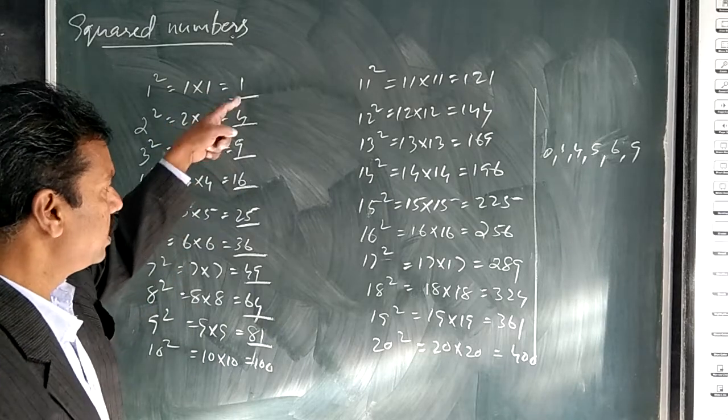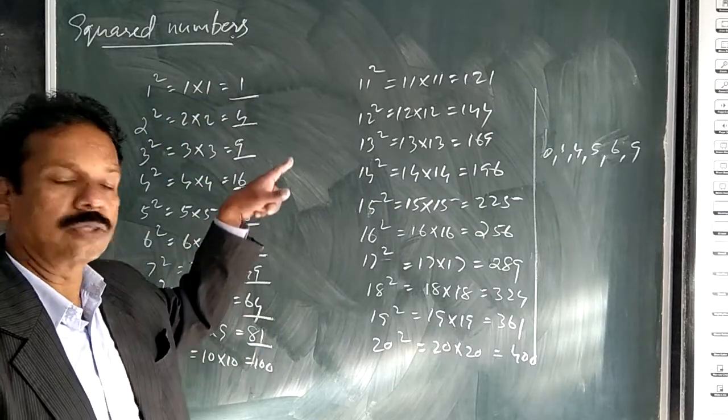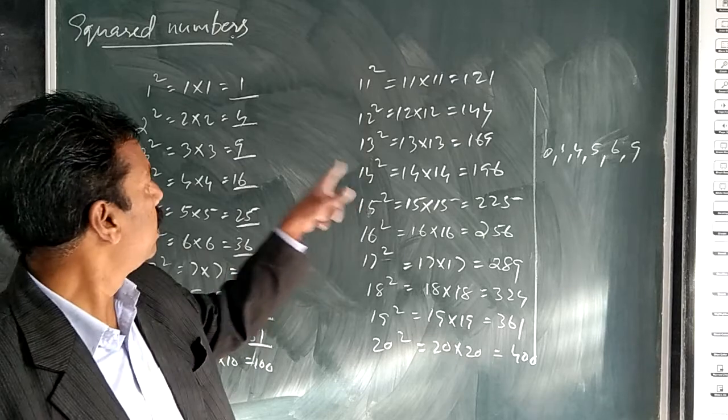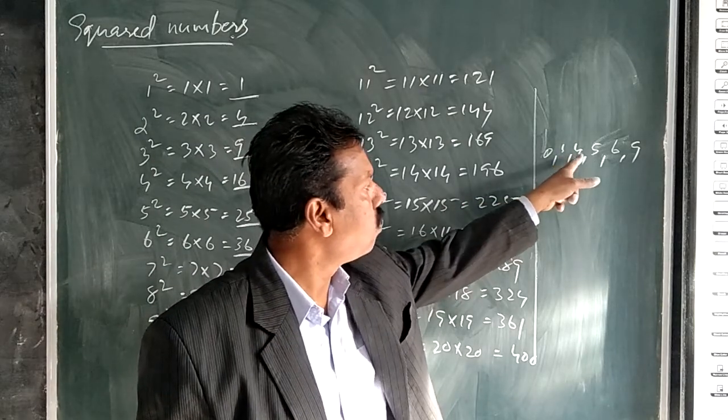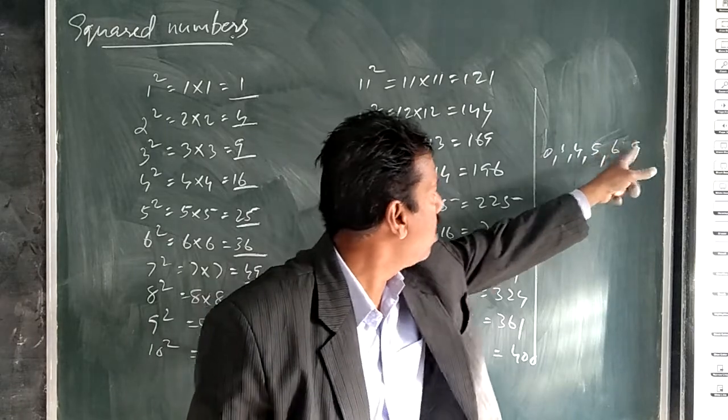you can see the last digit, that is the ones place digit or units digit, may be 0, 1, 4, 5, 6, or 9. No other number.